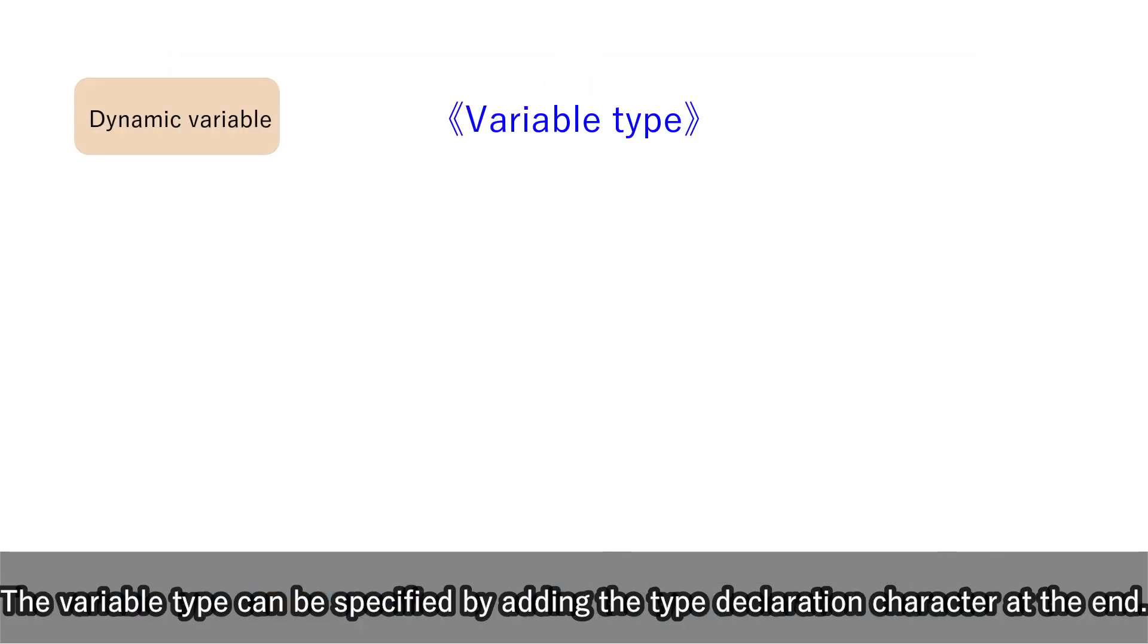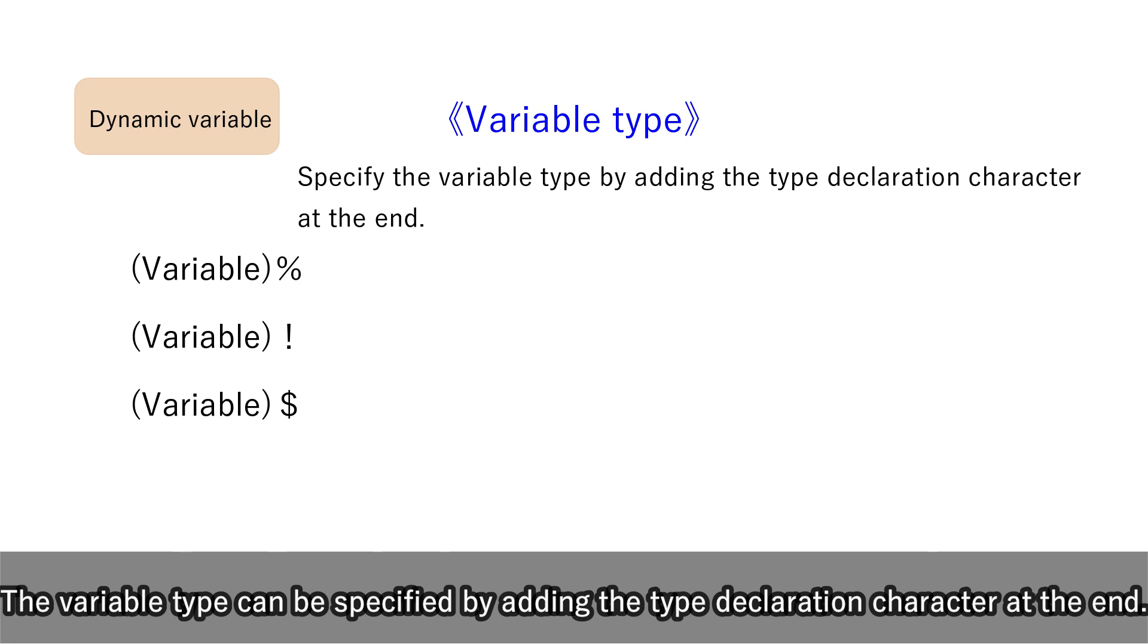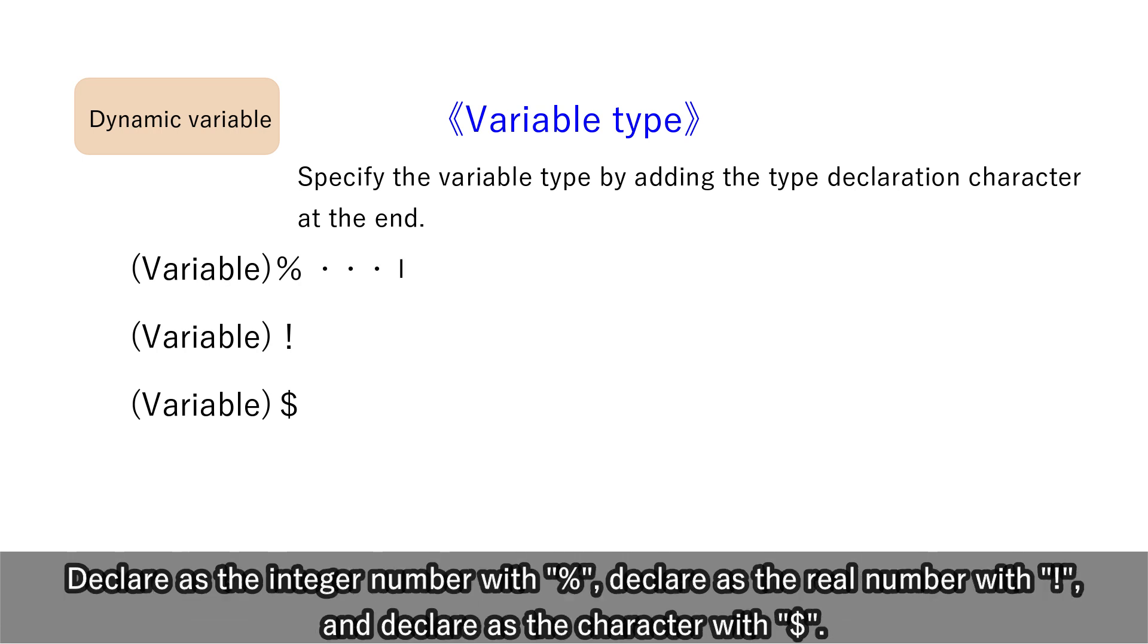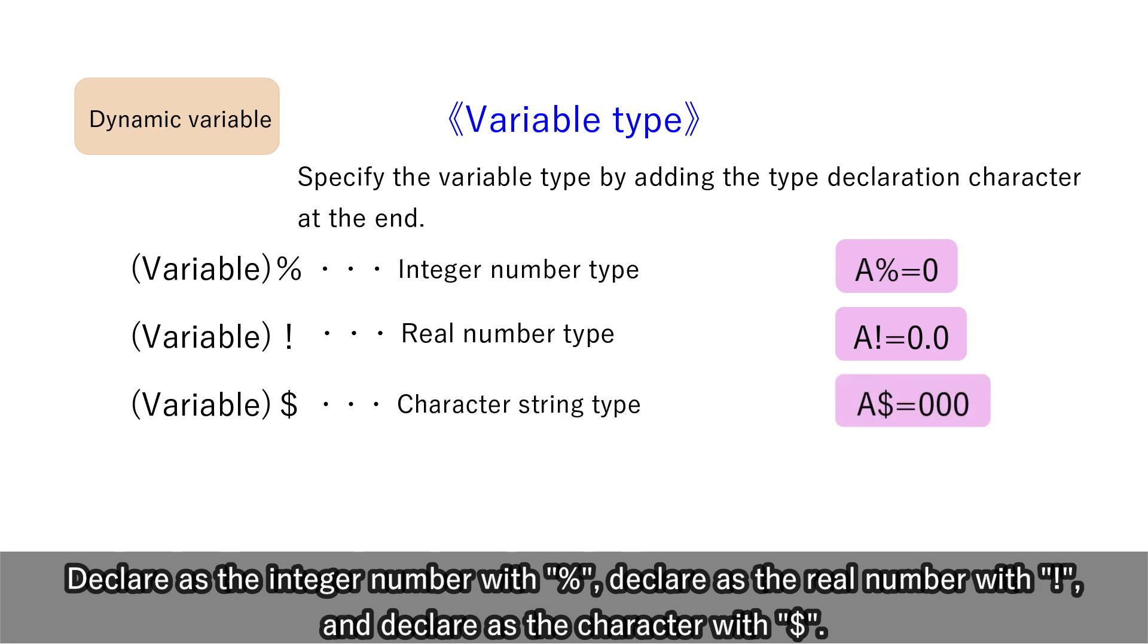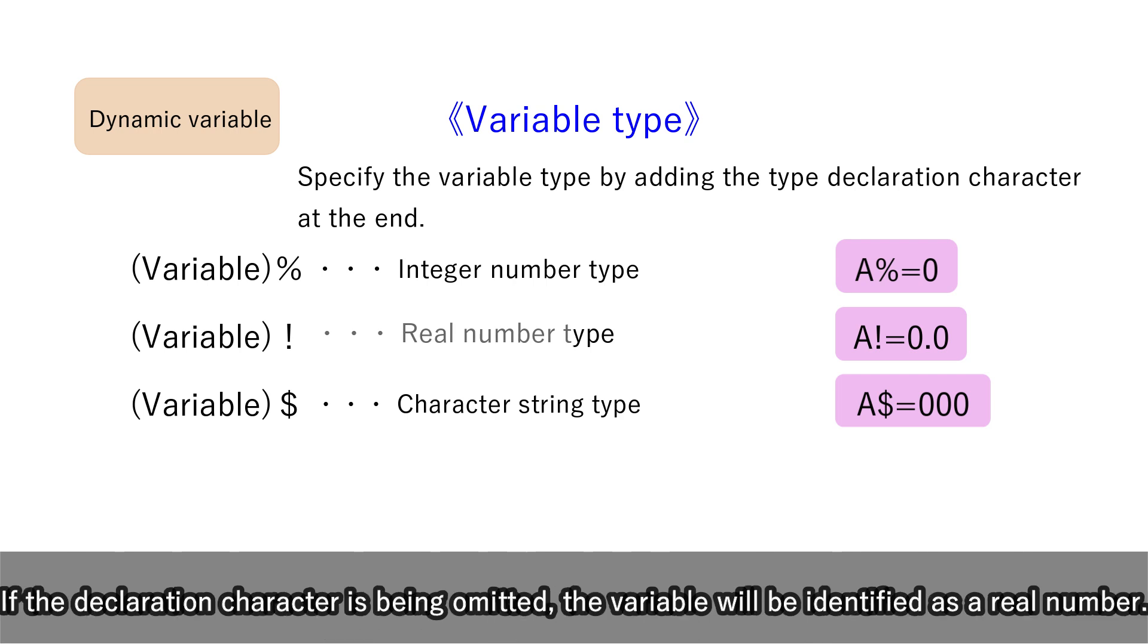The variable type can be specified by adding the type declaration character at the end. Declare is the integer number with percent mark, declare is the real number with exclamation mark, and declare is the character with dollar mark. If the declaration character is being omitted, the variable will be identified as a real number.